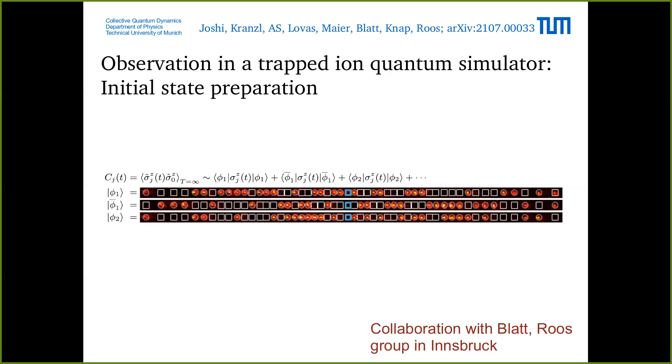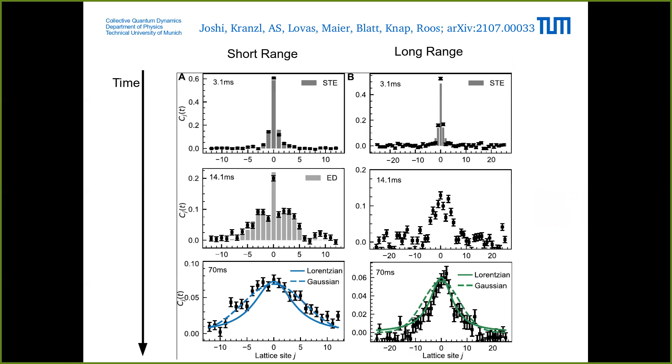One has to realize many correlation functions because what we're interested in ultimately is the full infinite temperature correlation function which is just a sum over many such product states. Experimentally what they did is they prepared a product state that tells us what the spin initially is at location zero and then they looked at the dynamics of the full chain and then averaged over many such states. That gave us the infinite temperature unequal time correlation function.